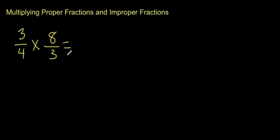It's actually very simple, you don't have to do anything to these fractions at all right now, you just simply multiply them straight across. So you're just going to go 3 multiplied by 8, 3 into 24, and 4 times 3 is 12.